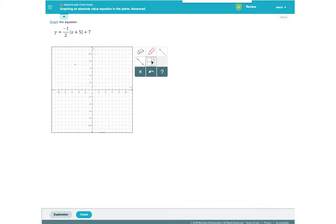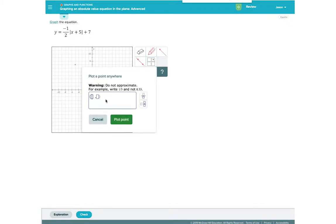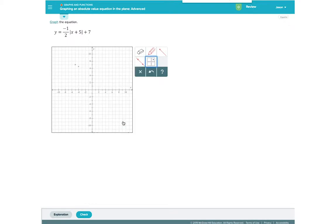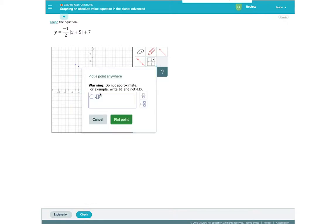We will now do the same for the other two points that we found. Negative 4 for x and 6.5 for y. Then, negative 6 for x and 6.5 for y.